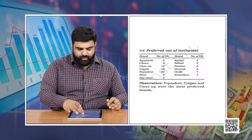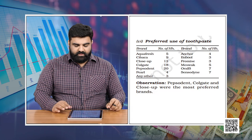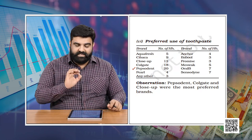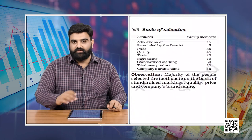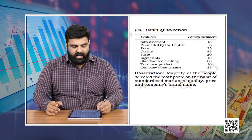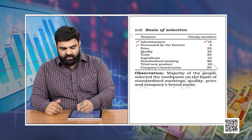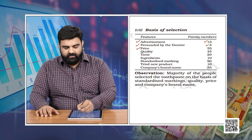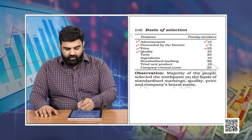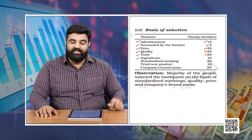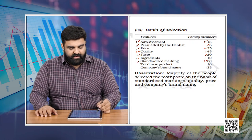The preferred use of toothpaste was found most with brand P — around 20 households preferred brand P. For the basis of selection of a toothpaste: 15 members were persuaded by advertisements, 5 by the dentist, 35 by price, 45 by quality, 20 by taste, 10 by ingredients, and 50 members were attracted by standardized marketing techniques on the toothpaste.